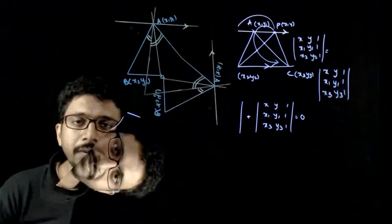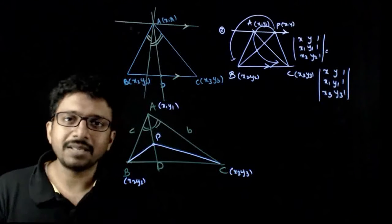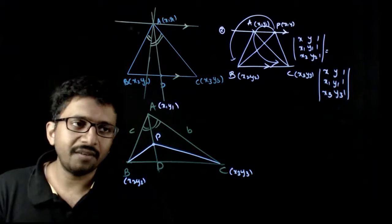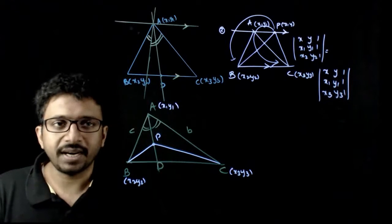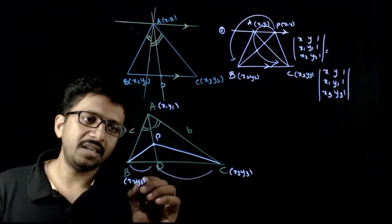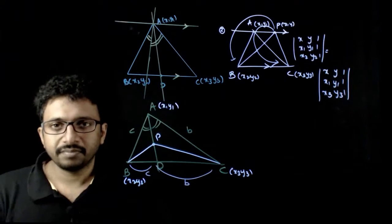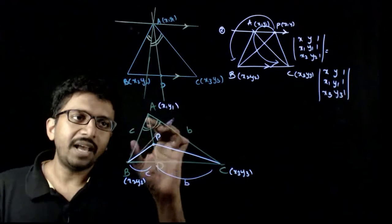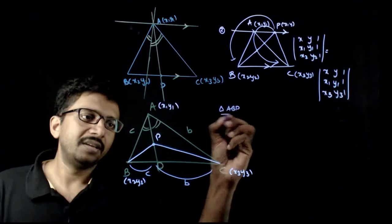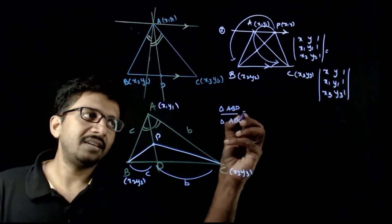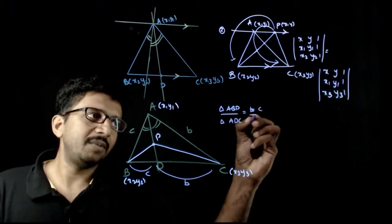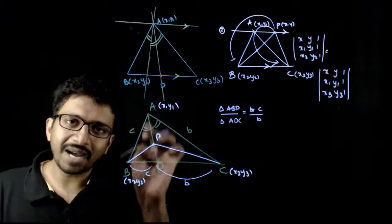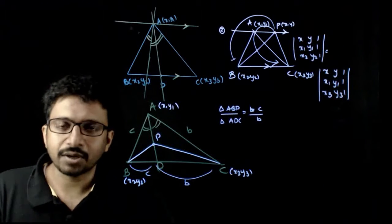Now the third question is about the equation of the angle bisector AD. If A is the vertex and you draw the angle bisector AD, we know that the angle bisector divides the opposite side in the ratio of the adjacent sides. That is, BD to DC equals AB to AC, which equals c to b. The area of triangle ABD divided by area of triangle ADC equals c to b, since these two triangles have the same height and bases in the ratio c to b.